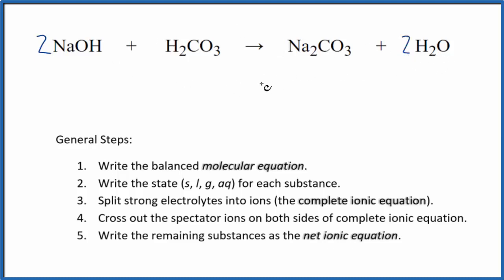So this is the balanced equation for NaOH plus H2CO3. Now we can write the state for each substance. Sodium hydroxide, sodium compounds are soluble, and this is a very strong base, so it's going to be aqueous and it'll dissociate. Strong electrolyte. Carbonic acid is a weak acid, so it's still going to be aqueous, but it's a weak electrolyte. Won't dissociate. Sodium compounds, very soluble. They'll dissociate, plus water is a liquid. So we have the states.